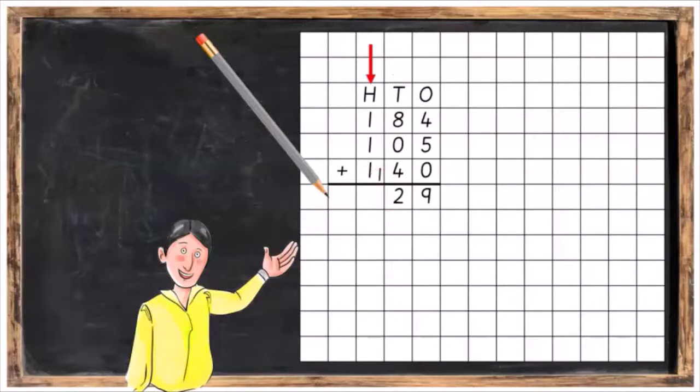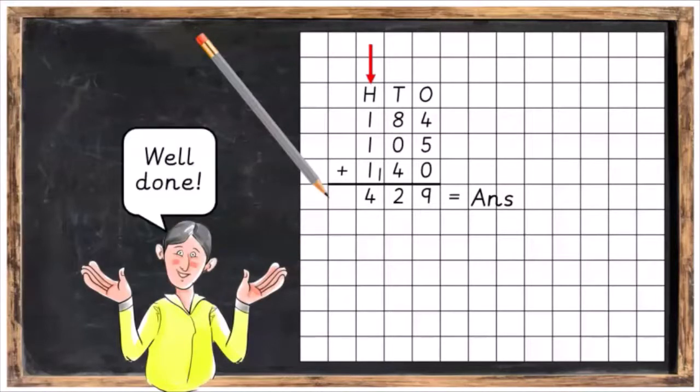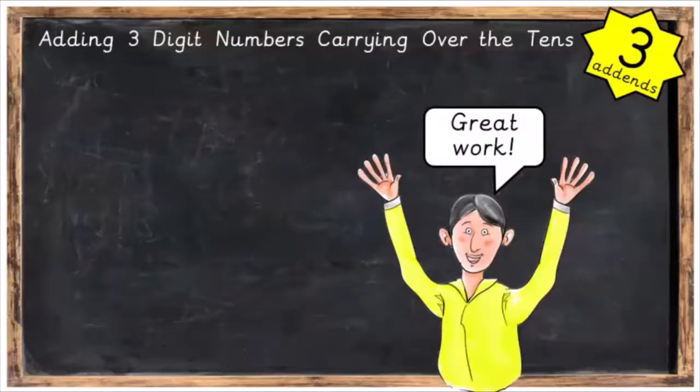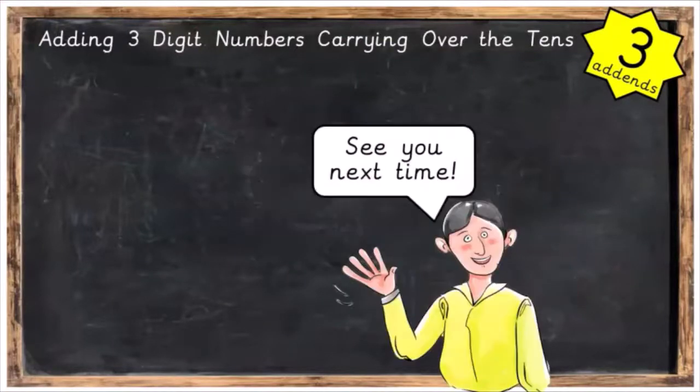And finally, we go over to the hundreds. So one plus one plus one plus the one we carried over is equal to four. And that's the final answer. Well done. Great work. You've successfully completed this lesson. See you next time.